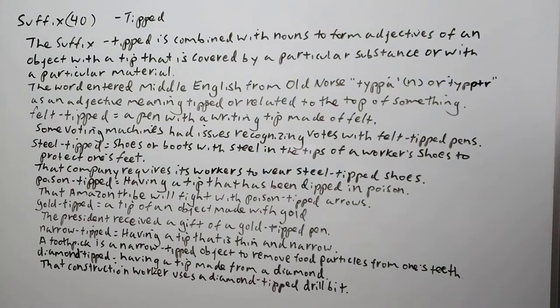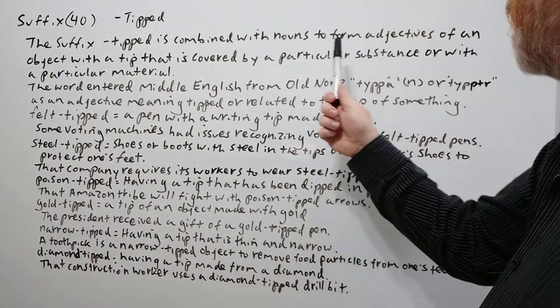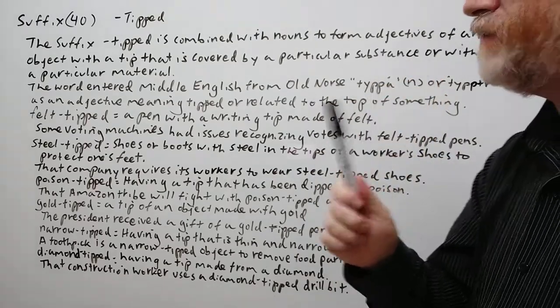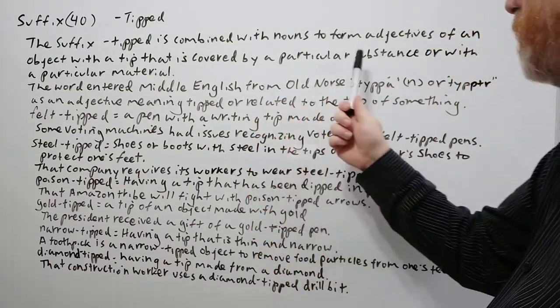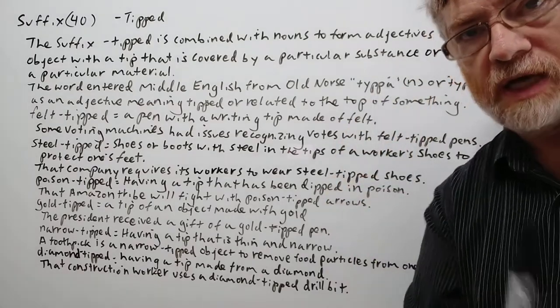Let's get right to it. The suffix tipped is combined with nouns to form adjectives of an object with a tip that is covered by a particular substance or with a particular material.